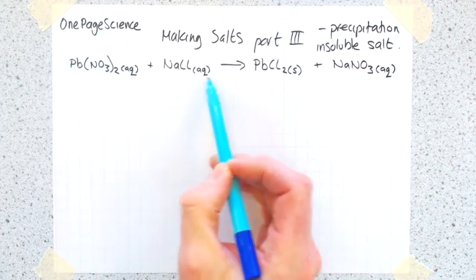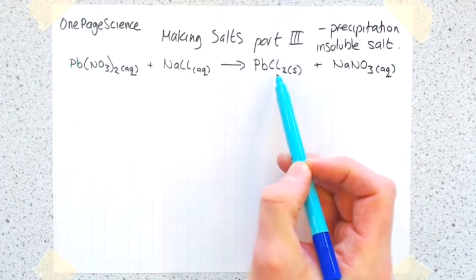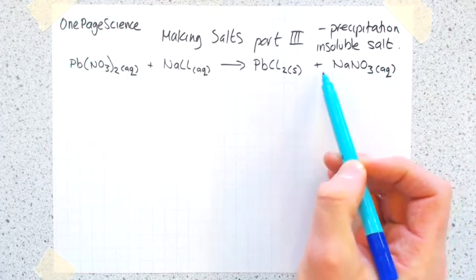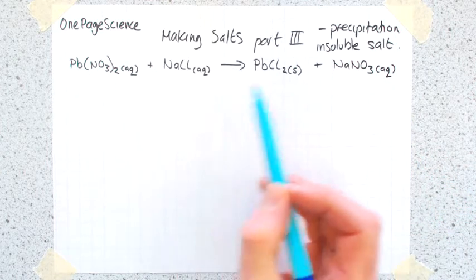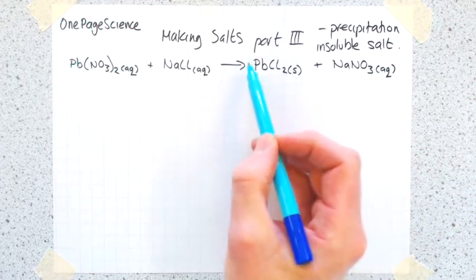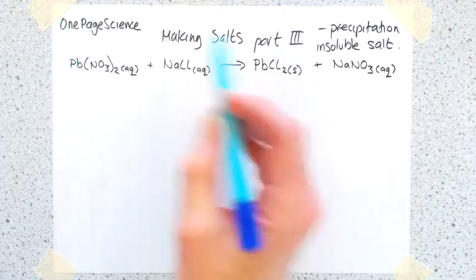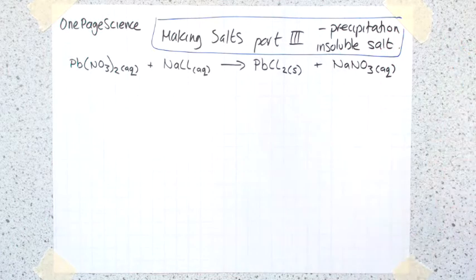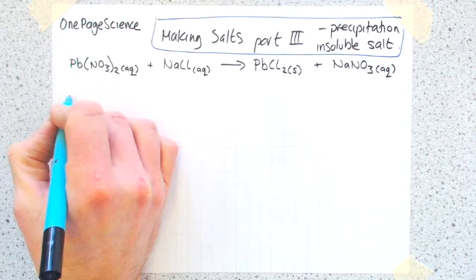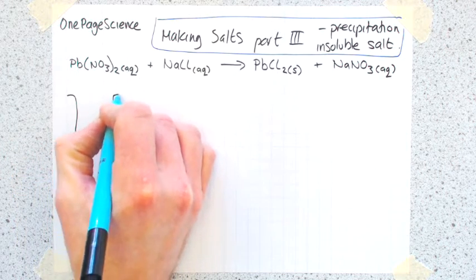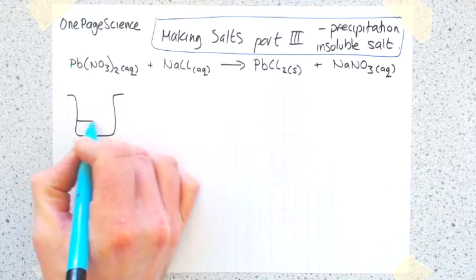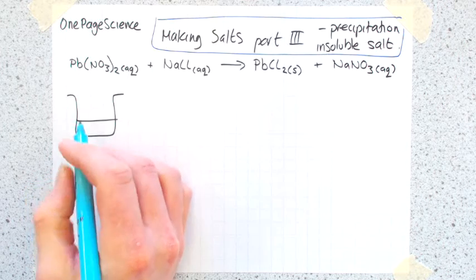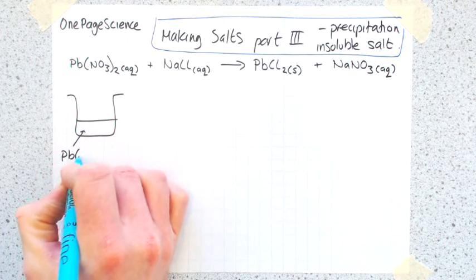So you start off with a solution plus a solution, forming a solid and something also in solution. The point of this method is: how do we get this solid away from all these things? So you start off with a beaker...